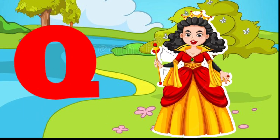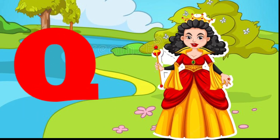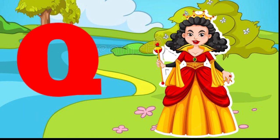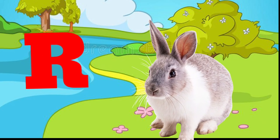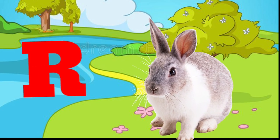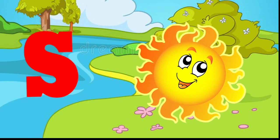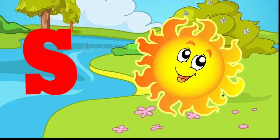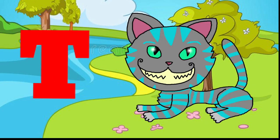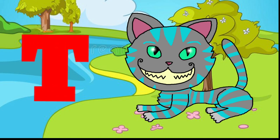Q is for queen, q-q-queen. R is for rabbit, r-r-rabbit. S is for sun, s-s-sun. T is for toad, t-t-toad.